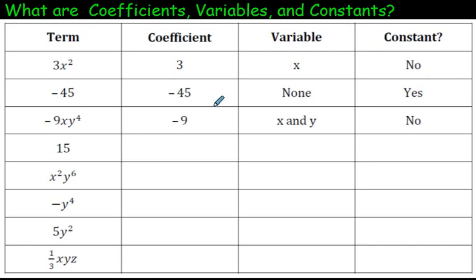The first part of the chart is filled in for us. So a coefficient is the number in front of the variable, okay? And a constant is when it's just a regular old number. It can be positive or negative. So in this question here, the coefficient is 3, and the variable is x.